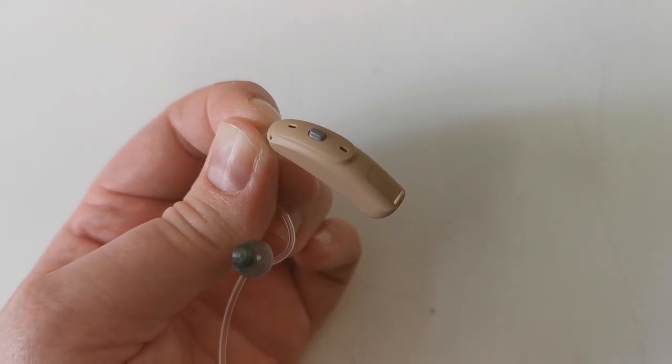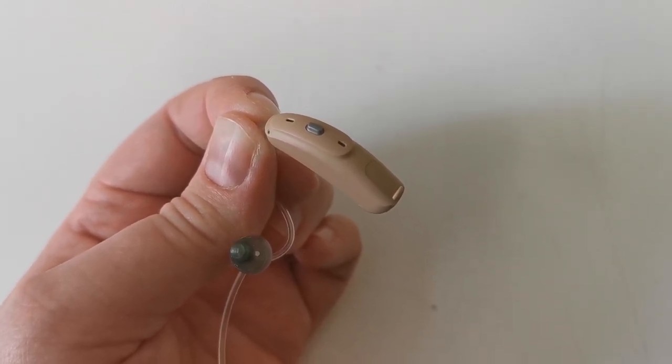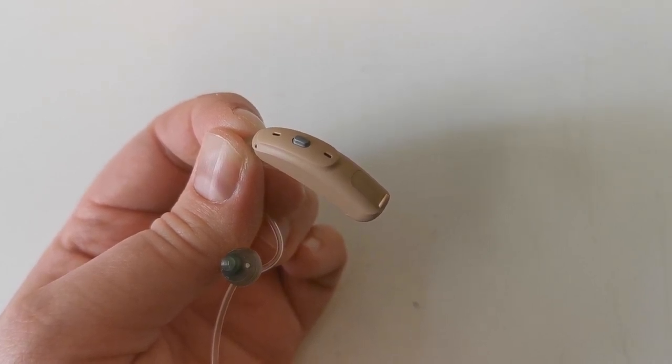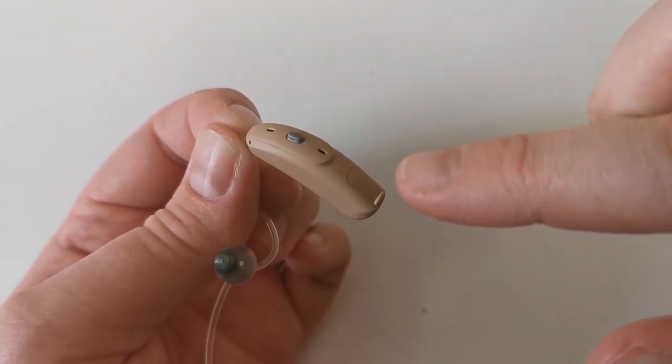In this video we will show you around the hearing aid. The beige part of the hearing aid is what sits behind your ear.